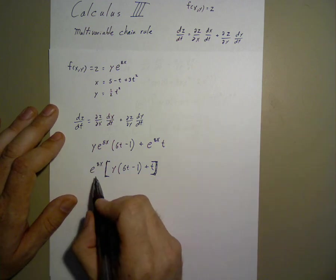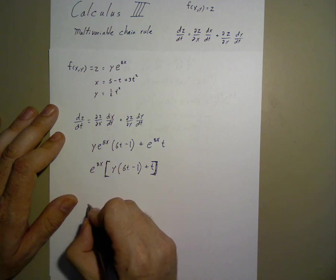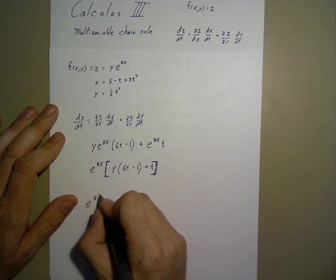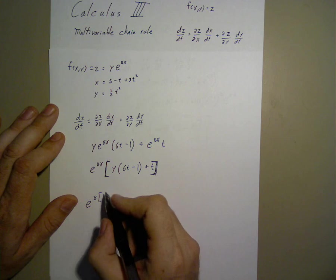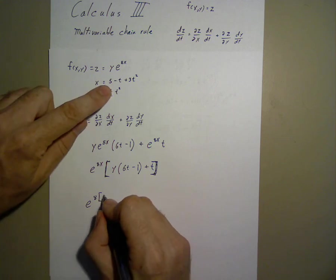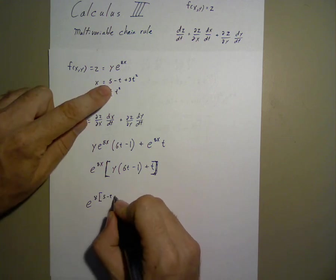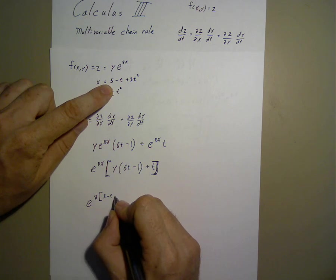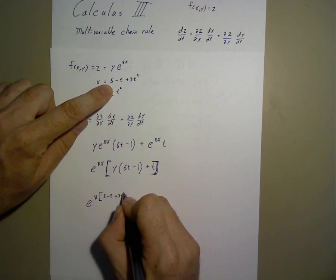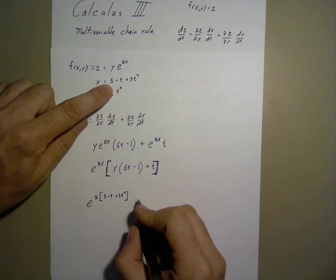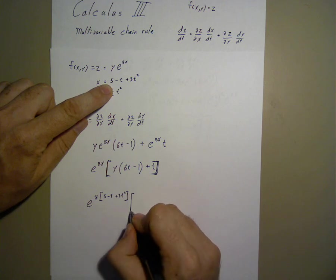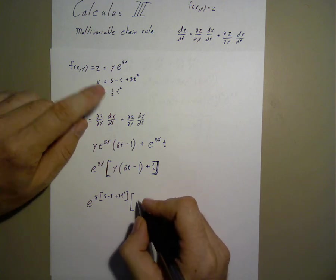So I'll substitute in e to the 8x, which is 5 minus t plus 3t squared, squared times y.